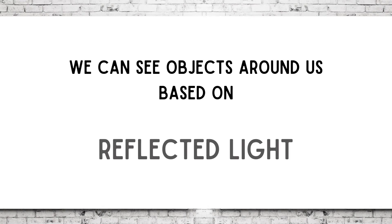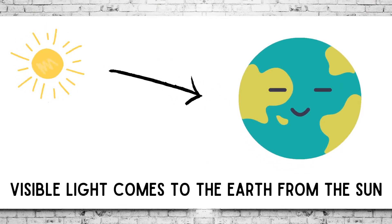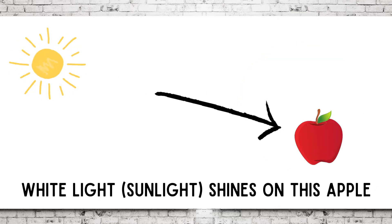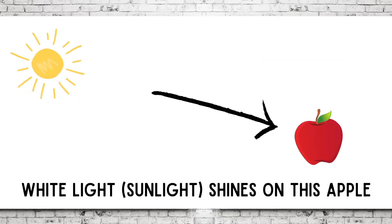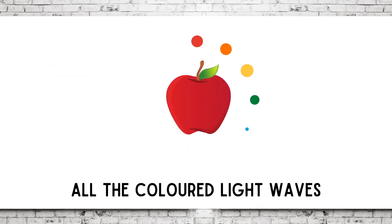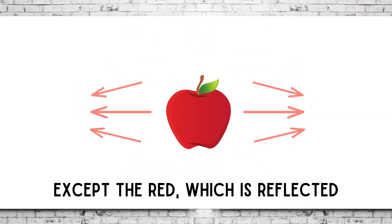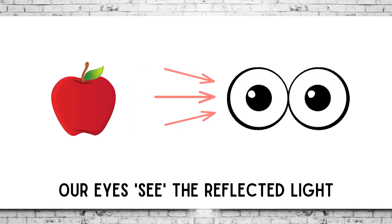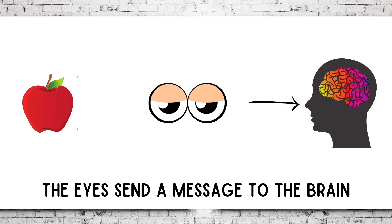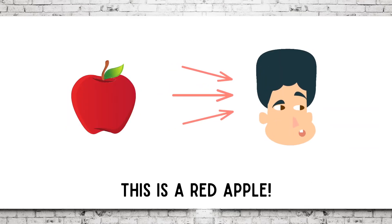We can see objects around us based on reflected light. Let's find out how. Visible light comes to the earth from the sun. White light shines on this apple. Remember, white light is made up of many other colors. All the colored light waves are absorbed by the apple, except the red, which is reflected. Our eyes see the reflected light and send a message to the brain. That's how we know this is a red apple.